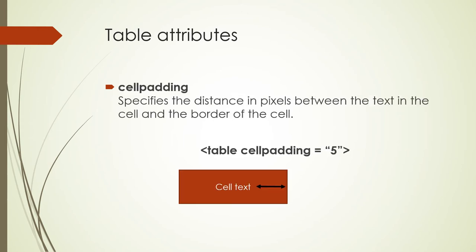The next table attribute is called cell padding. This is the distance in pixels between the text and the border of the cell. The space between the text and the border of the cell is called cell padding.